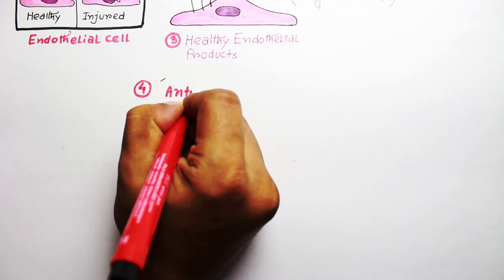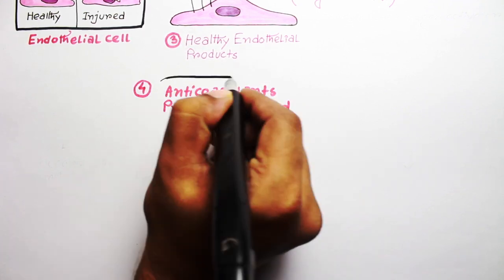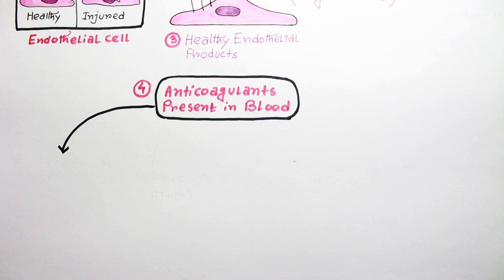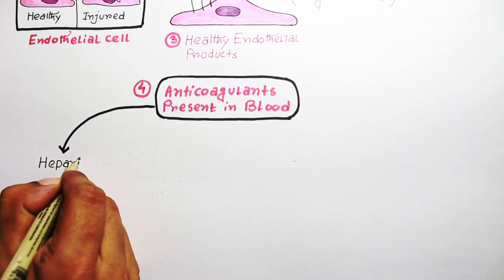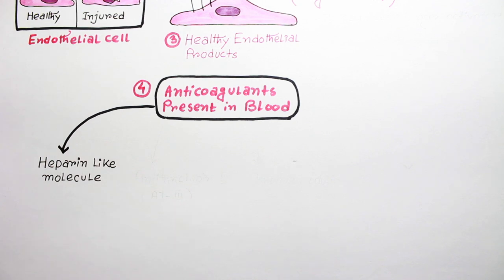Now let's discuss some anticoagulants which are naturally present in blood. Healthy endothelium doesn't allow any activated coagulation factors to accumulate near it and prevents unnecessary coagulation.